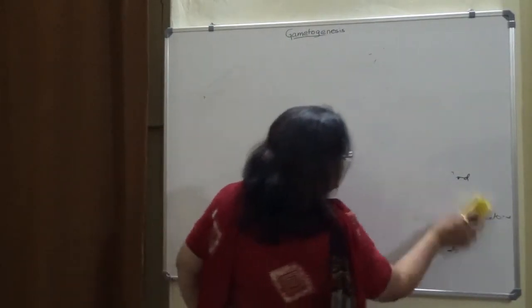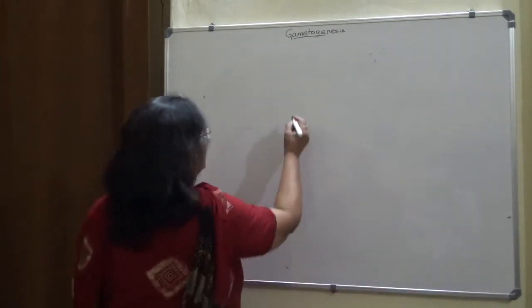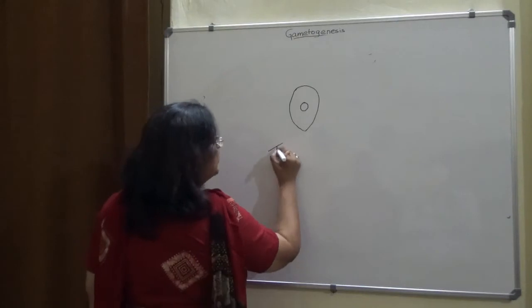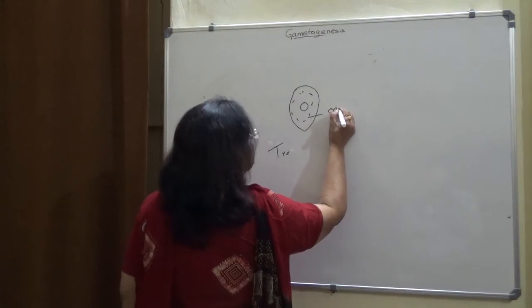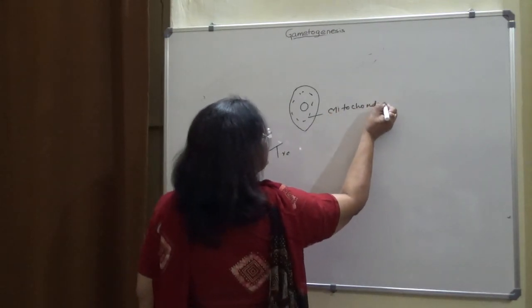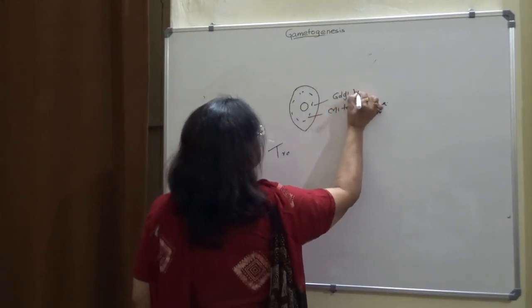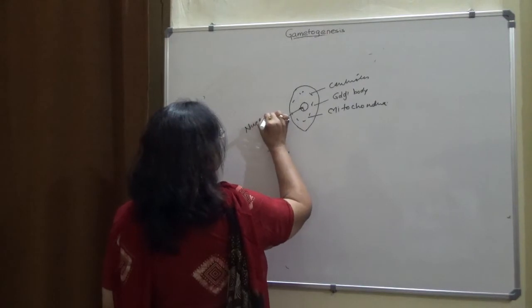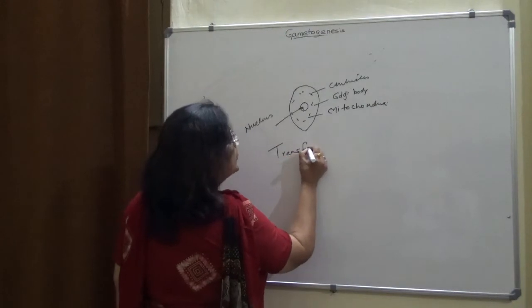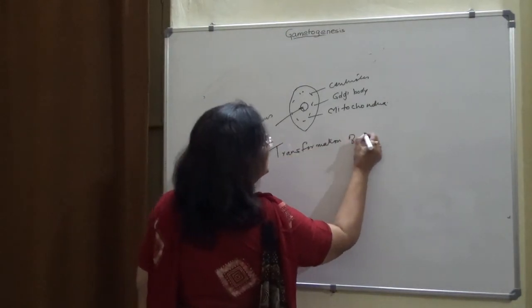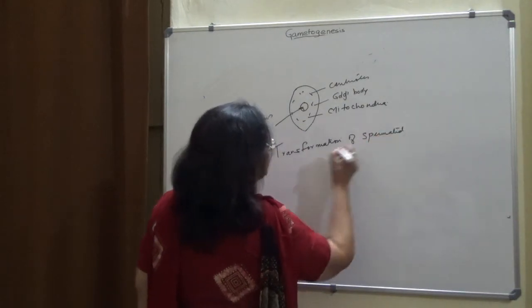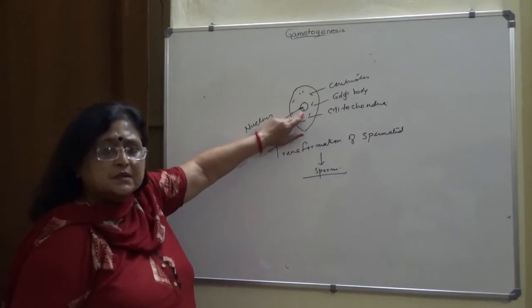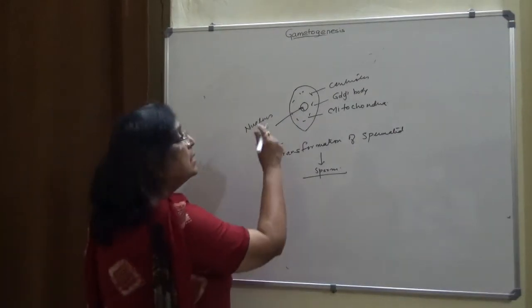The spermatids are oval in shape and contain a nucleus. During spermiogenesis the transformation adds cytoplasmic inclusions like mitochondria, Golgi body, centriole, and other nuclear components. During the transformation of a spermatid into a sperm, the following changes occur. The nucleus, which was quite prominent during the spermatid stage, becomes small due to the condensation and removal of water.